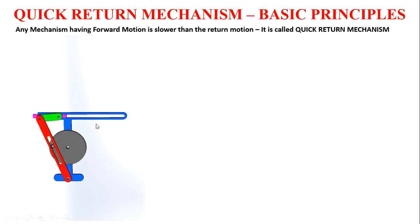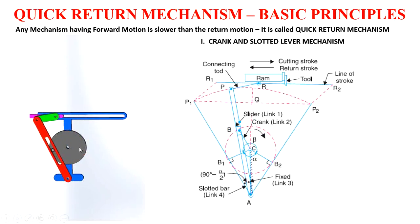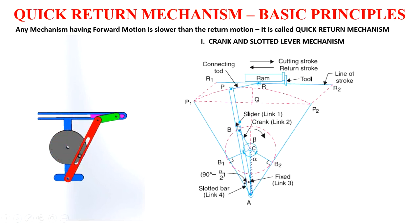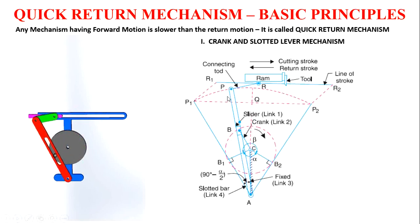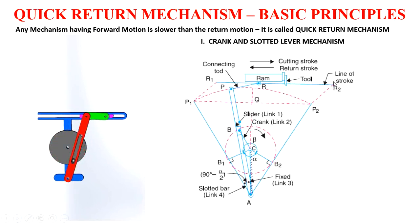This is called crank and slotted lever Quick Return Mechanism. We can see the schematic as seen in textbooks. We must have one fixed center — here AC is the fixed center. The second link is the crank, which is CB. The third link is the slotted bar, which is AP. Whenever this starts rotating, it is connected to another connecting rod which is fixed to the RAM. This mechanism is used in shaping machines where the cutting tool will have a slow forward movement and fast return movement to avoid wasting machining time.